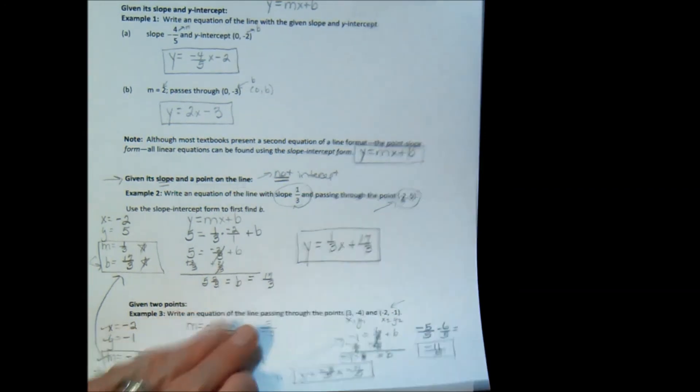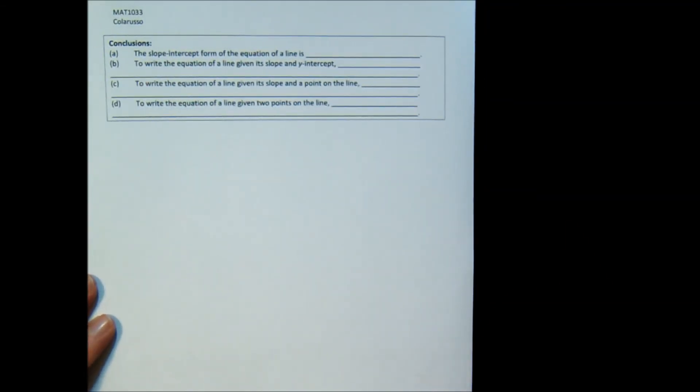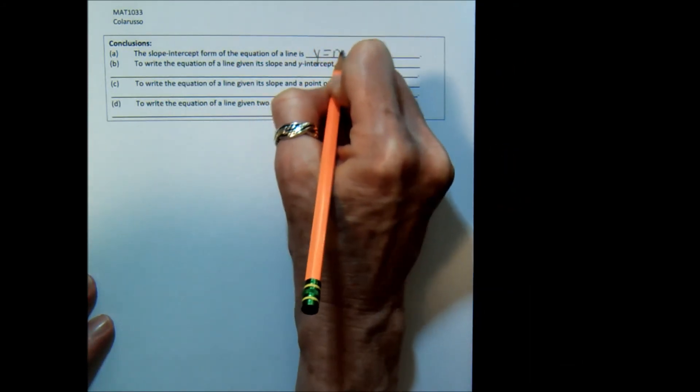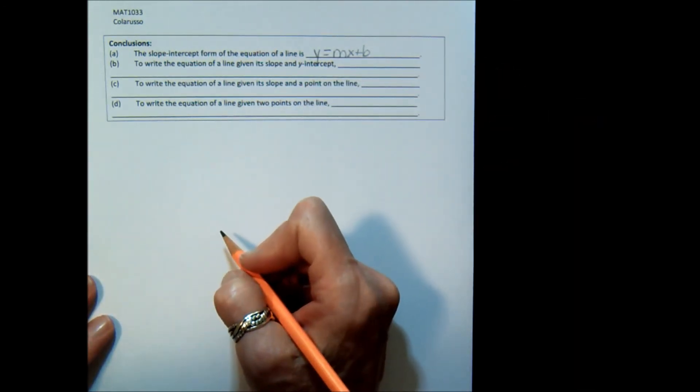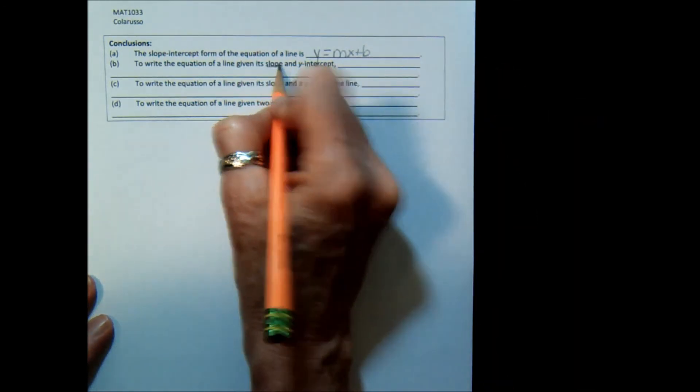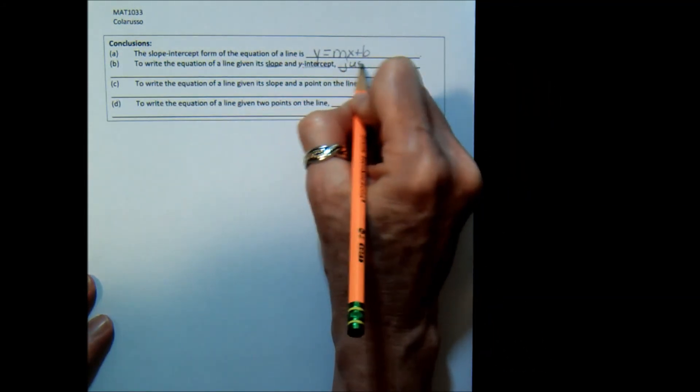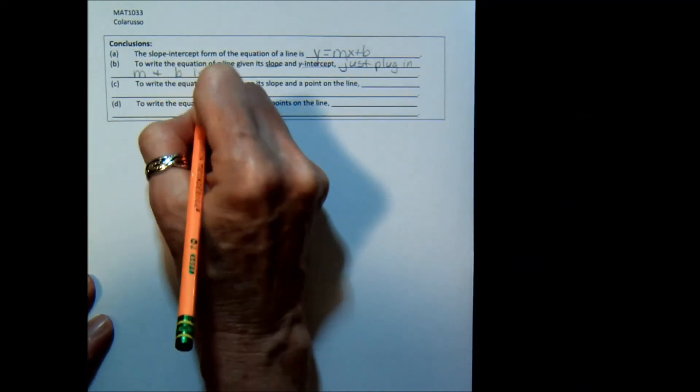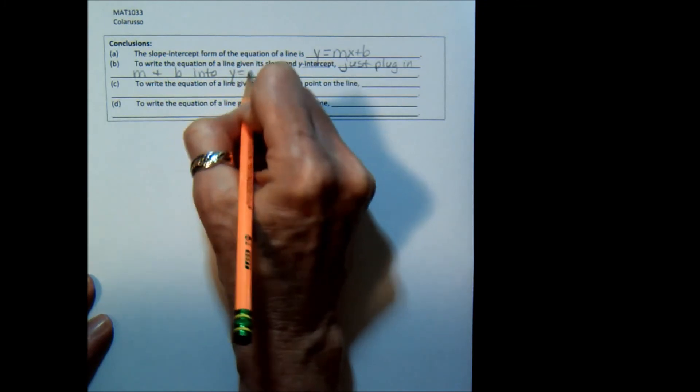So let's make some conclusions here about what we just did. And at the top of this page you'll see it says the slope intercept form of the equation of a line is y equals mx plus b. To write the equation of the line, if you are given its slope and y intercept, you just plug in m and b into y equals mx plus b.